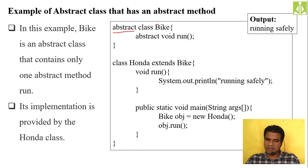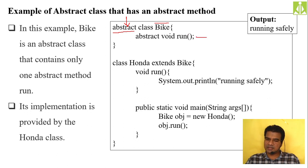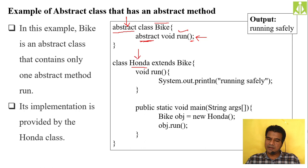Example of an abstract class: I create a class bike and make it abstract by using the abstract keyword. Inside I take only one method — a run method — and make that method also abstract. As the run method is abstract I don't give any implementation, so I simply end it with a semicolon. Then I create another class Honda that extends bike. As Honda extends bike, it is Honda's responsibility to give the implementation of the abstract run method.